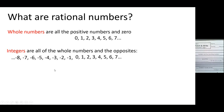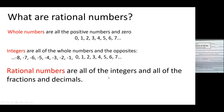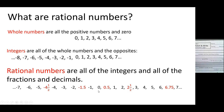All the positive numbers, all the negative numbers, and zero are integers. Now we're moving on to rational numbers. Rational numbers are all of the integers and all of the fractions and decimals — positive numbers, negative numbers, zero, fractions, and decimals. The number line can now have zero, 0.5, one, two, two and a half, and also negative one, negative one and a half, negative two, negative three, negative four and a half.